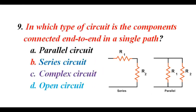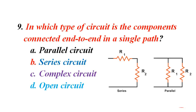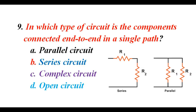In which type of circuit are the components connected end to end in a single path? A. Parallel circuit. B. Series circuit. C. Complex circuit. D. Open circuit. The correct answer is A. Parallel circuit.